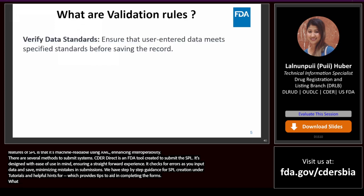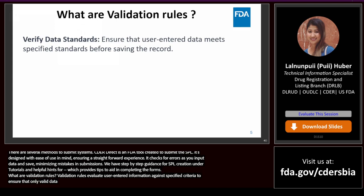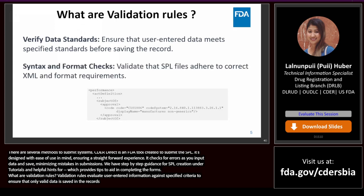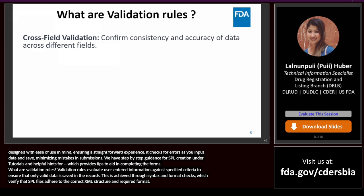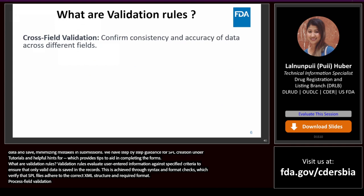What are validation rules? Validation rules evaluate user-entered information against specified criteria to ensure that only valid data is saved in the records. This is achieved through syntax and format checks, which verify that SPL files adhere to the correct XML structure and required format. Cross-field validation ensures consistency and coherence of data across different fields in the SPL submissions.